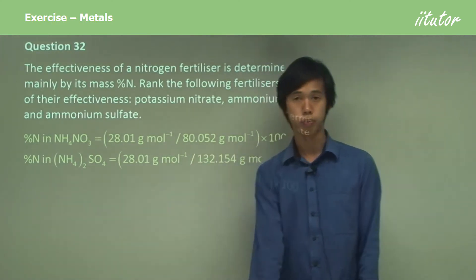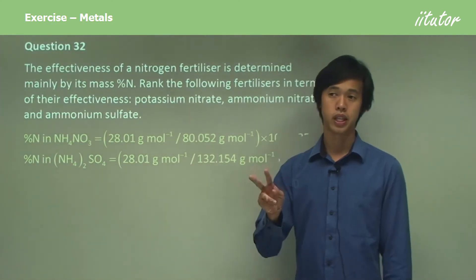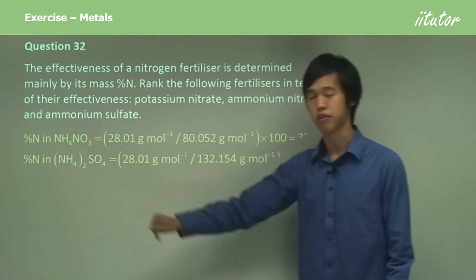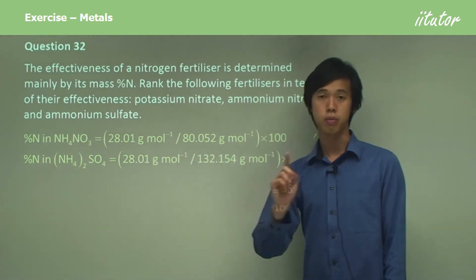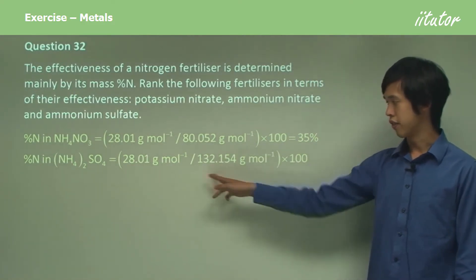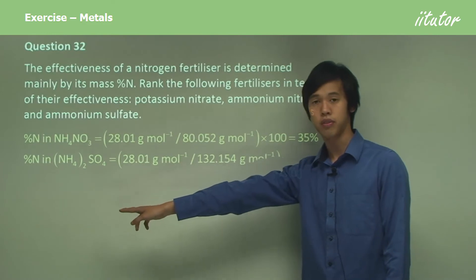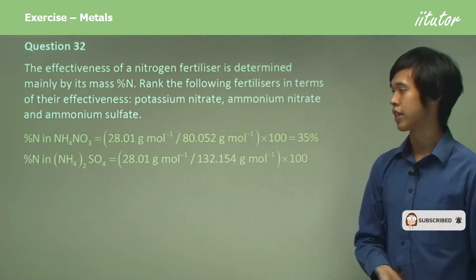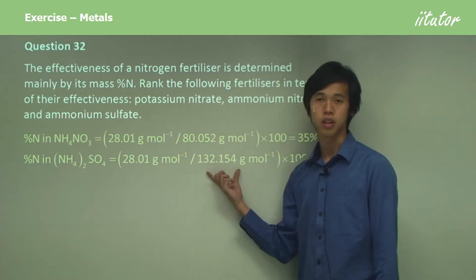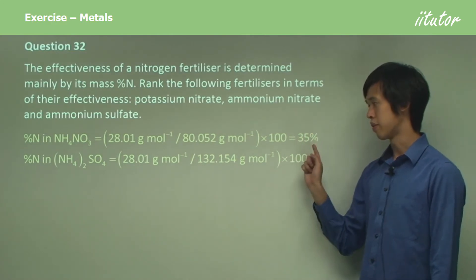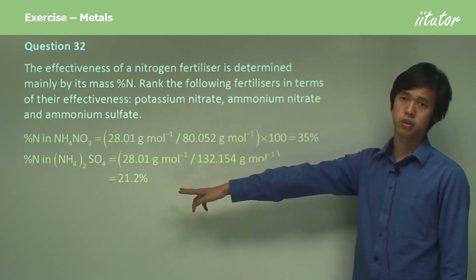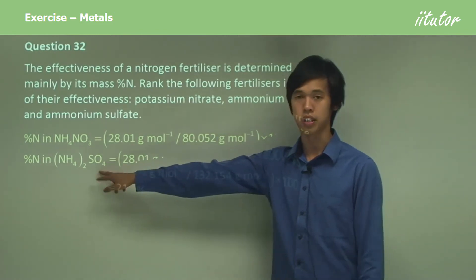For ammonium sulfate: ammonium has a valency of plus one, sulfate has a valency of minus two. So for every one sulfate ion we need two ammonium ions — that's why you have two there. Again there are two nitrogens for every one ammonium sulfate molecule, giving 28.01. Dividing by the molar mass of ammonium sulfate, which is 132.154, we get 21.2%. The sulfate adds so much mass that the percentage mass of nitrogen is much lower.